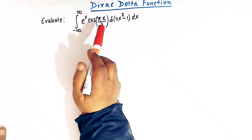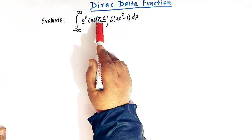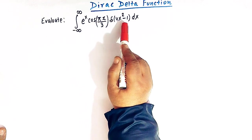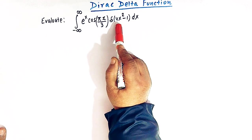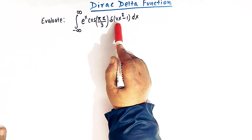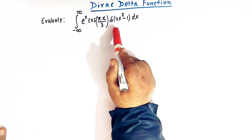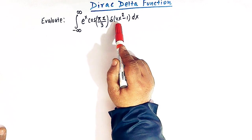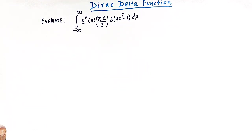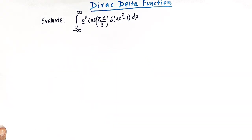Here we have to evaluate the integral from minus infinity to infinity of e^x times cosine of πx/3, and the Dirac delta function of 4x² minus 1. We see that we have a quadratic function inside this delta function. In other words, we have the Dirac delta function whose argument is a quadratic polynomial. We will see how we can solve these kinds of integrals in which we have a function as an argument in the Dirac delta function.